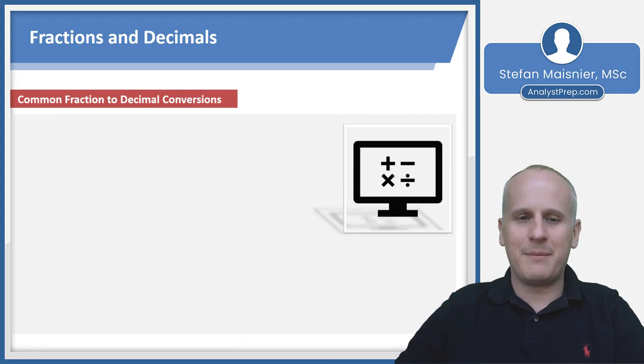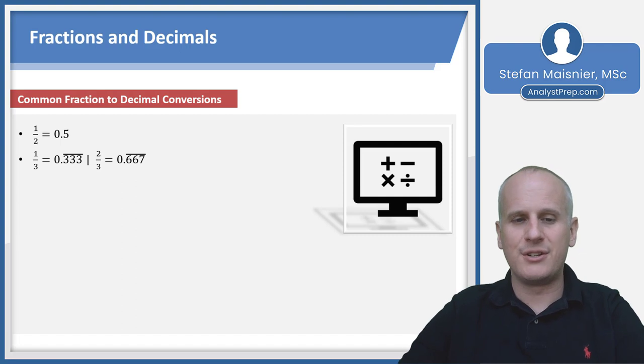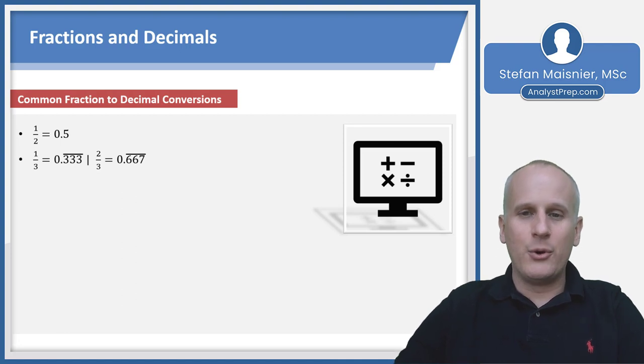There are common fraction to decimal conversions that can help in estimation and expediting calculation. We want to execute technical math in the format of the answer choices. One half is 0.5. One third is 0.3 repeating, and two thirds is 0.66 rounding to 0.67. The lines atop numbers indicate they repeat.